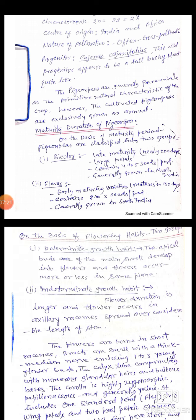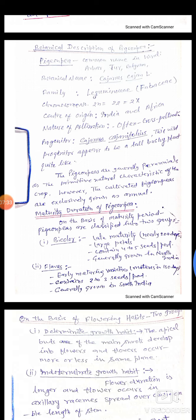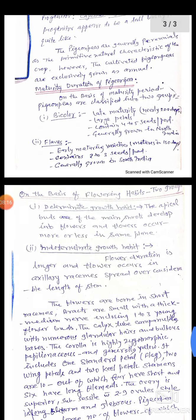On the basis of maturity, there are different groups. The long-duration maturity group is about 180 to 210 days, has large pods containing 4-5 seeds per pod, is generally grown in North India, and is drought resistant. The short-duration group contains 2-3 seeds per pod, is generally grown in South India under well-irrigated and short-irrigated conditions.